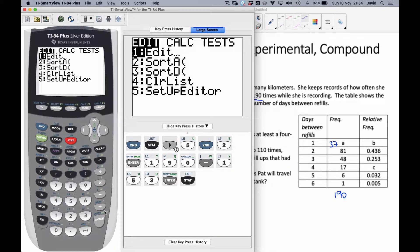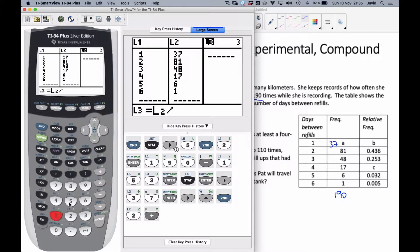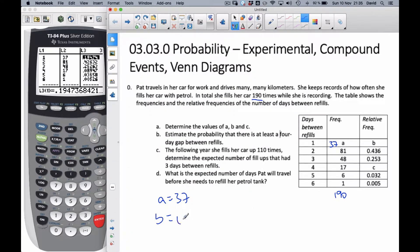So now if I go to my list, into L2, if I make this 37, all the values are there. To do my relative frequency to find B and C, if I go over here to L3, I can go L2 divided by 190. If I go L2 divided by 190, it will fill them all in accordingly. And so now I can see that B is 0.19474, and C is 0.08947. So I know B equals 0.195, and C is 0.0895.